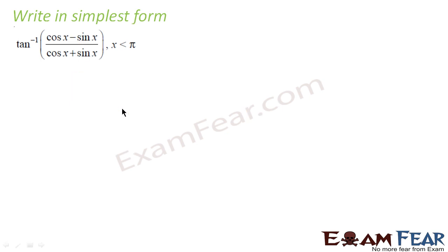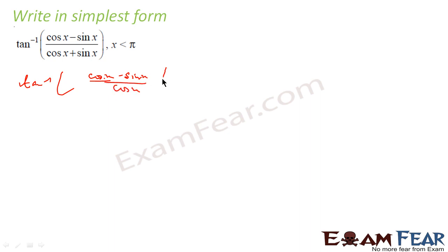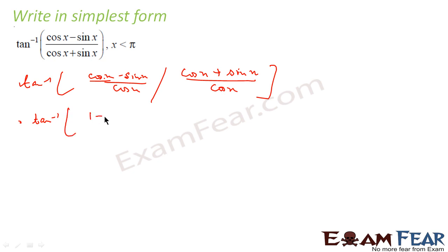Let's take one more expression: tan inverse of (cos x minus sin x) by (cos x plus sin x). What we do here is divide both numerator and denominator by cos x. This becomes tan inverse of (1 minus tan x) by (1 plus tan x).